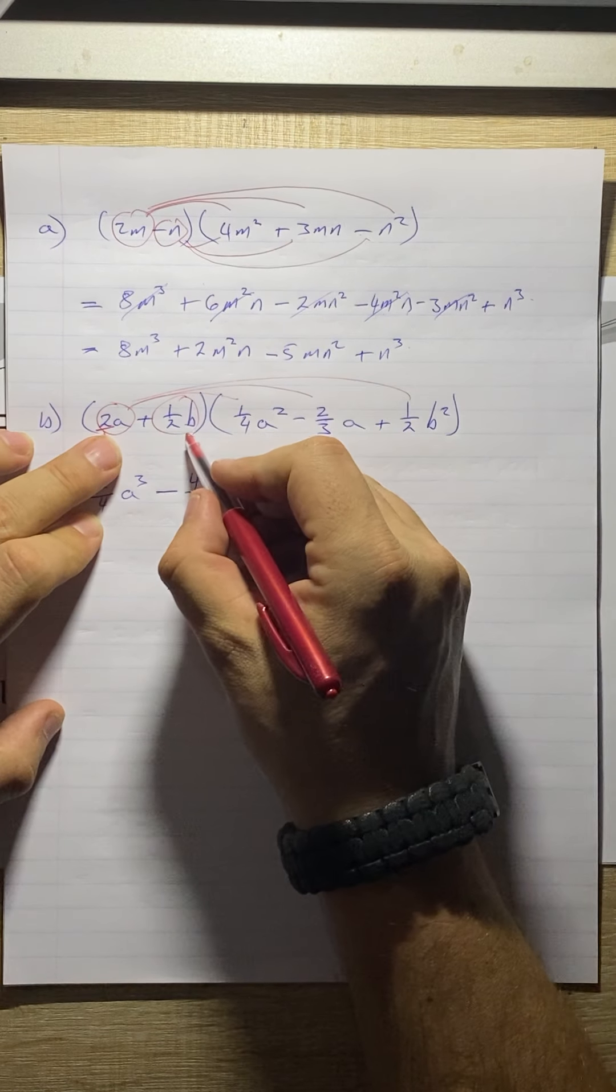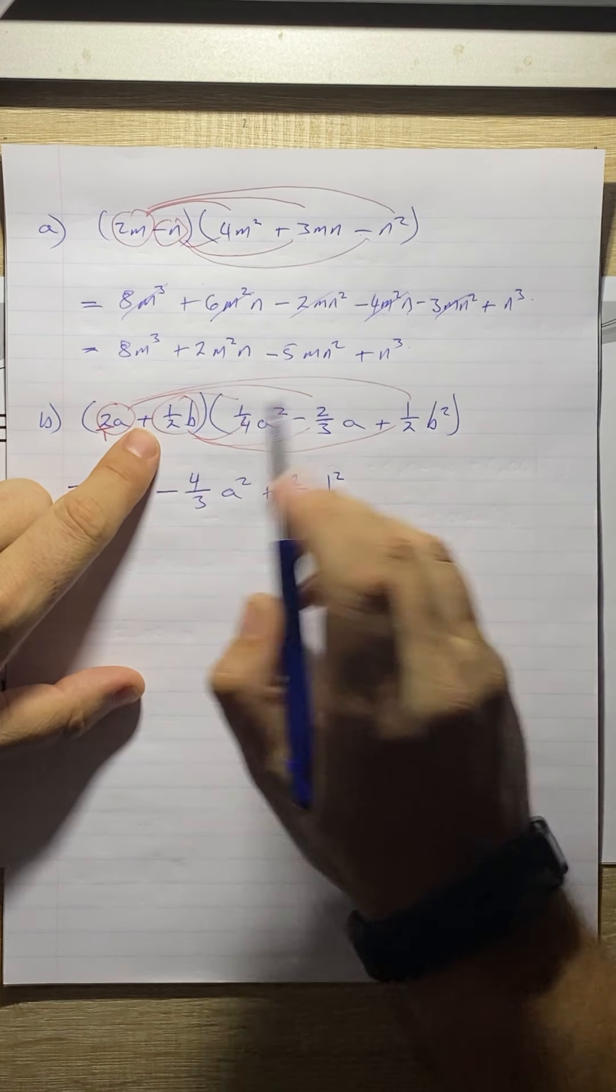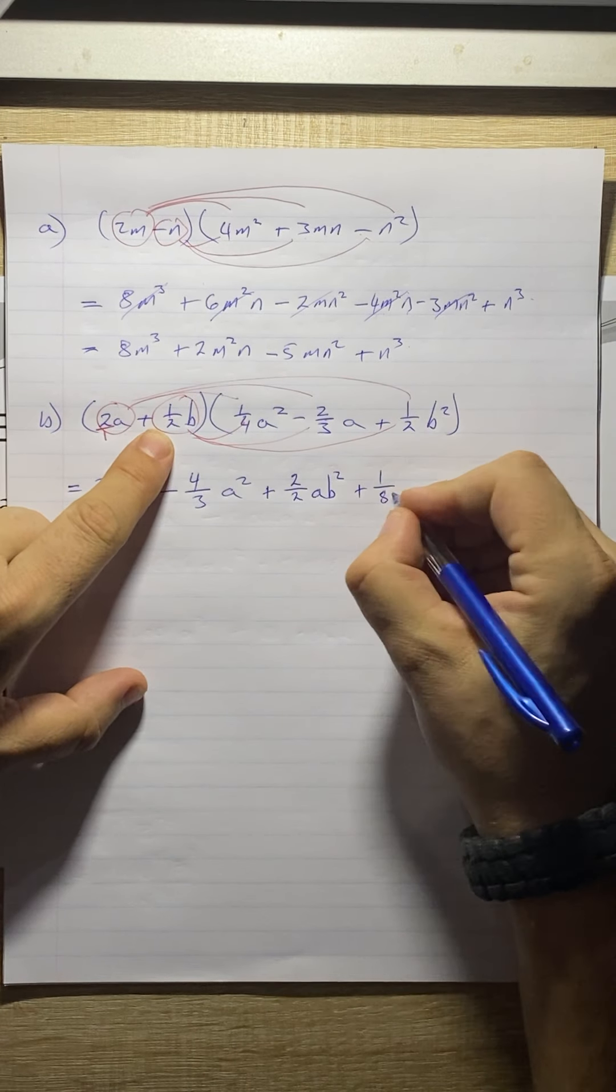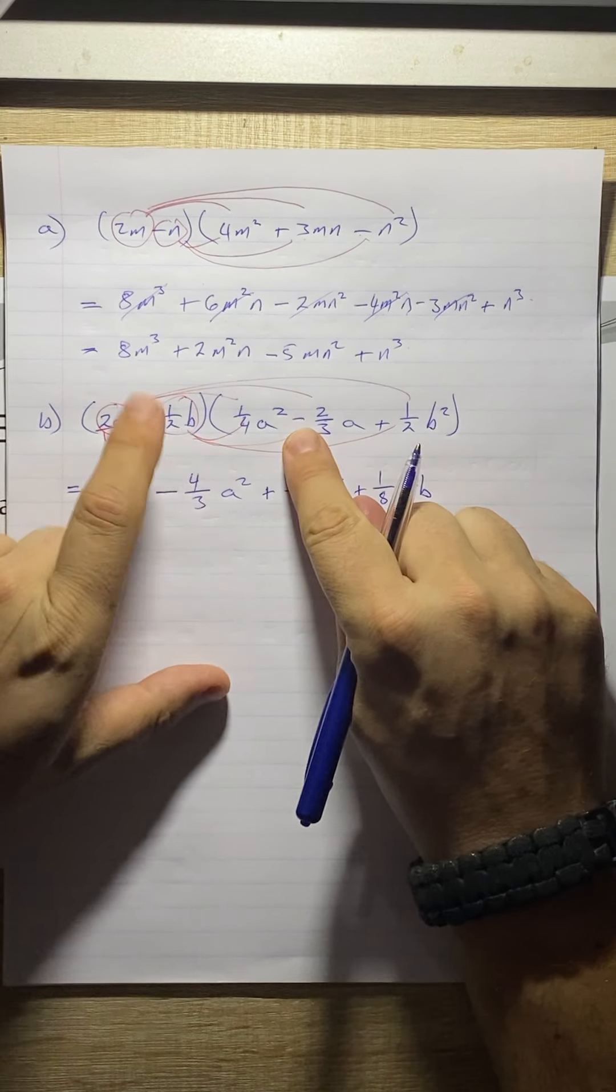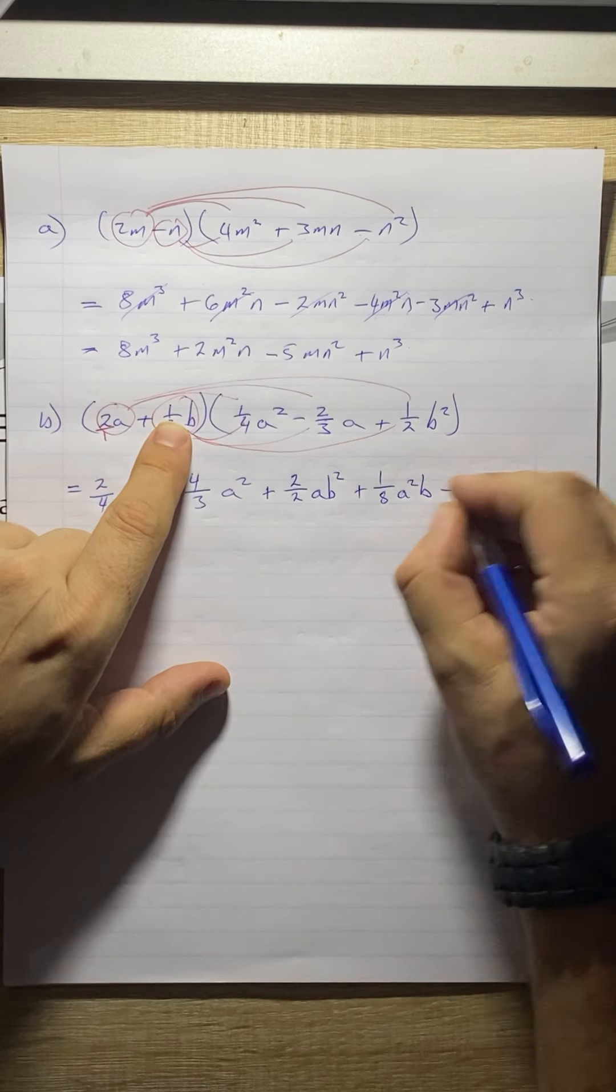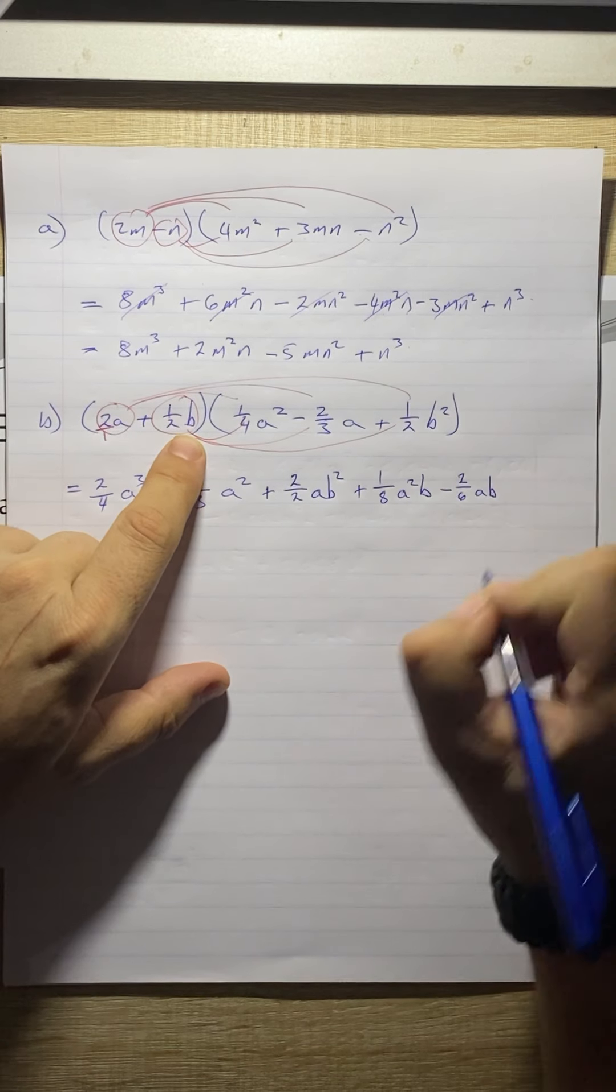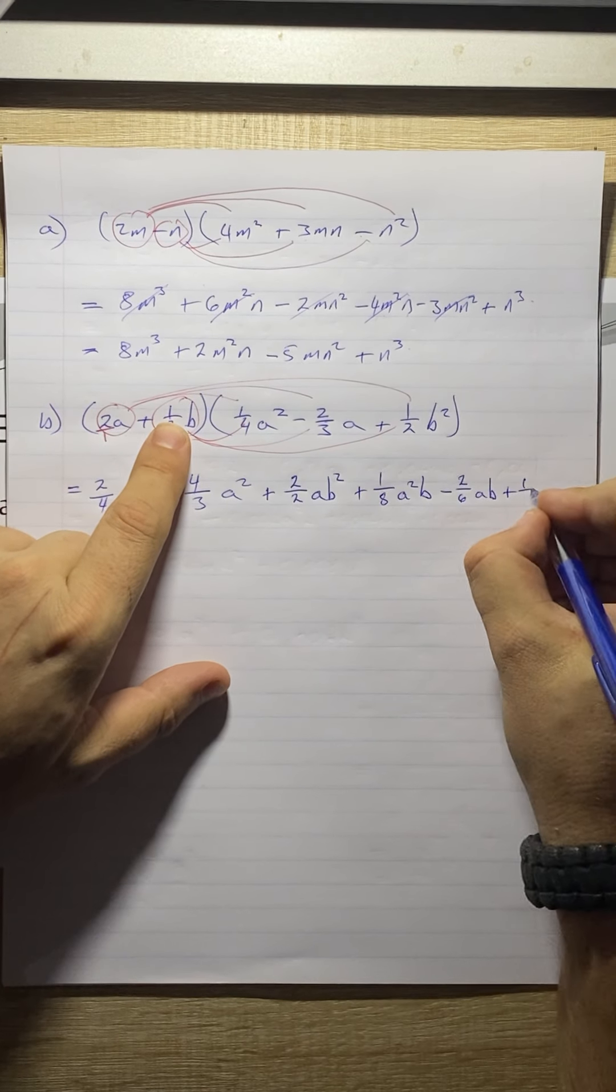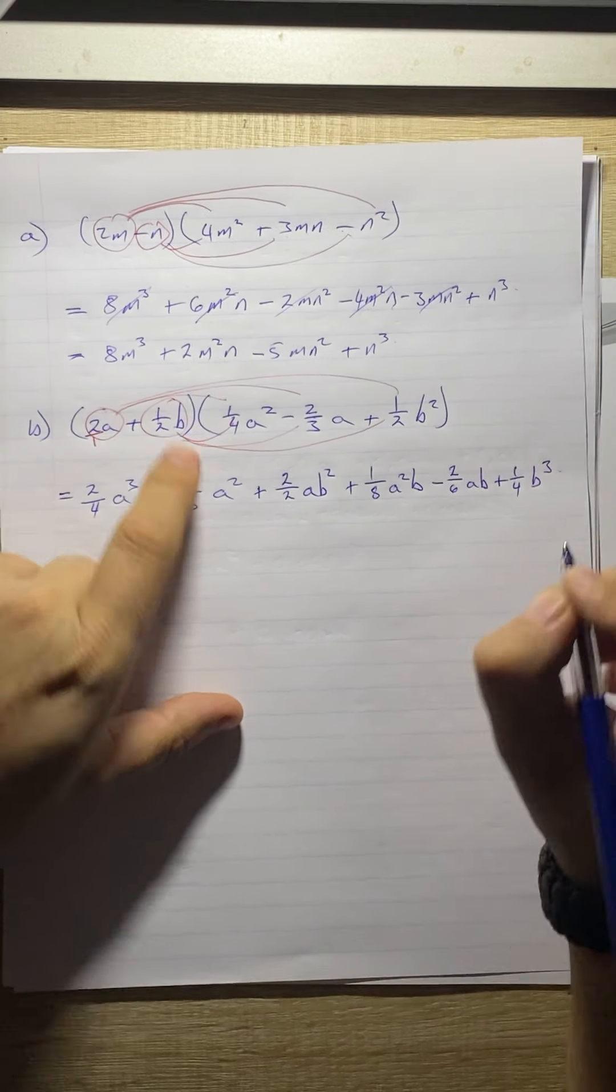Now we need to move on to the next term. Multiply in, multiply in, and multiply in. Top with top, bottom with bottom. So 1 times 1 is, and it's positive, will give us 1. 2 times 4 gives us 8, b times a squared will give us a squared b. Next one will give us a negative. Top with top, bottom with bottom. 1 times 2 is 2, over 2 times 3 is 6, b times a is a b. Then a positive times a positive is a positive. Top with top, bottom with bottom. So 1 times 1 is 1, 2 times 2 is 4, b times b squared is b cubed.